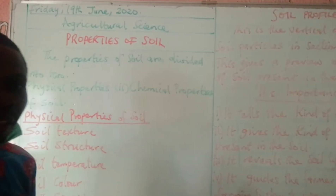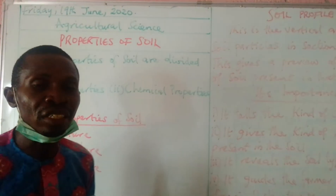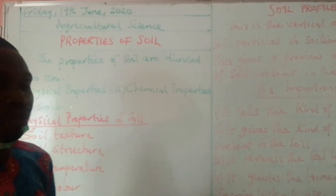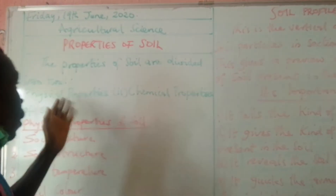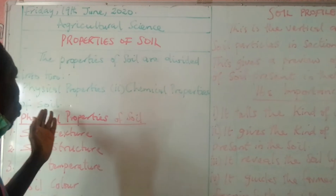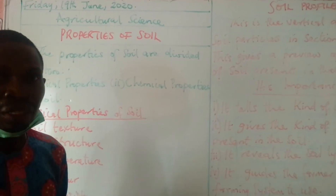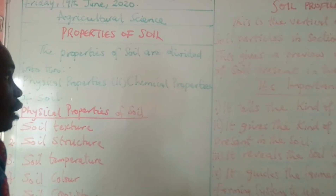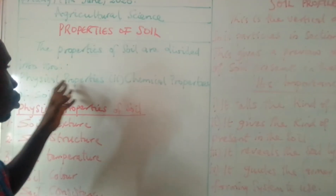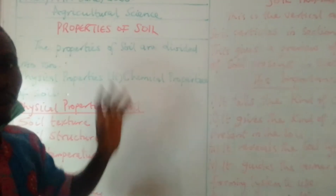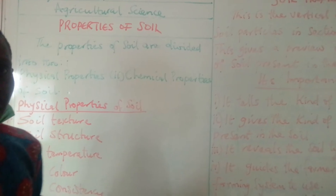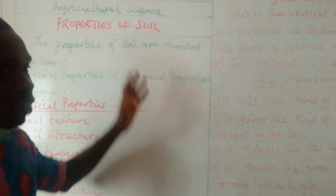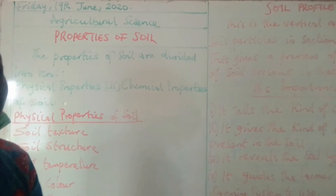When you look at properties of soil, it is divided into three parts. We have the physical properties and the chemical properties. When you look at the chemical properties and physical properties, they have various characteristics.